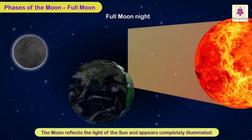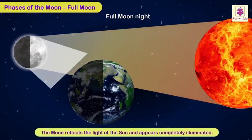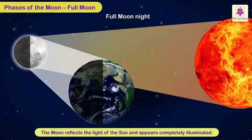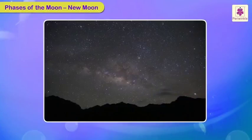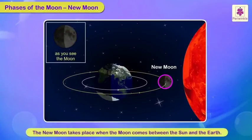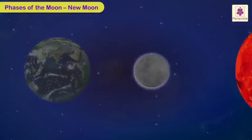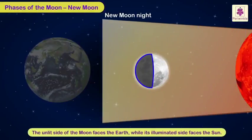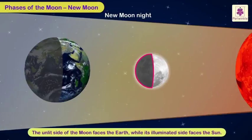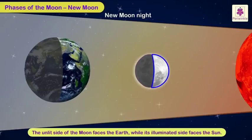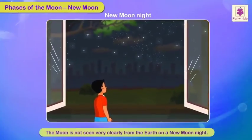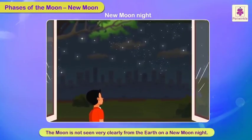Thus, the Moon reflects the light of the Sun and thereby appears completely illuminated. New Moon: The new moon takes place when the Moon comes between the Sun and the Earth. During this time, the unlit side of the Moon faces the Earth, while its illuminated side faces the Sun. Therefore, the Moon is not seen very clearly from the Earth on a new moon night.